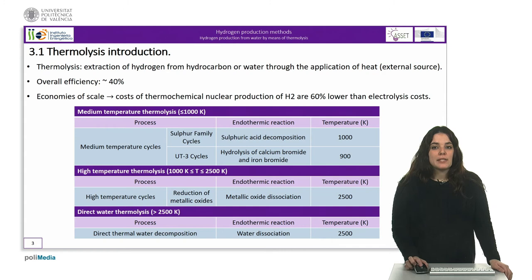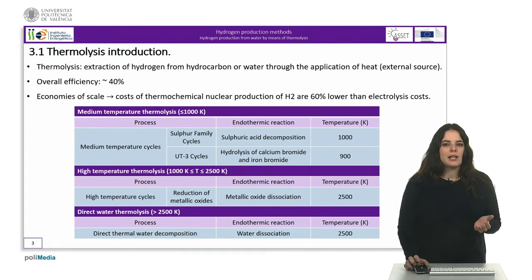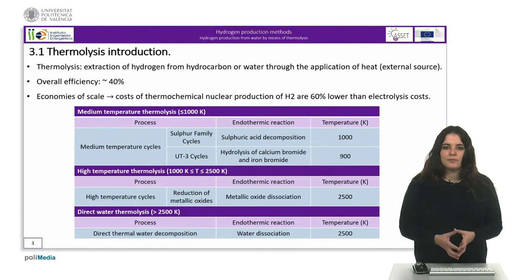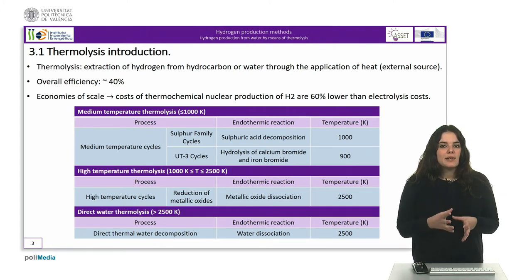By potential economies of scale it is estimated that thermolysis is better than electrolysis of water with electricity. In fact, the cost of thermochemical nuclear production of hydrogen is 60% lower than electrolysis, thanks to the fewer energy conversions that thermochemical production involves.